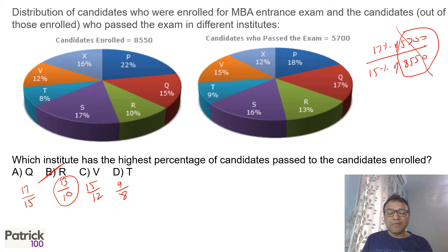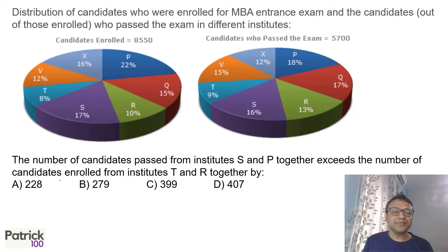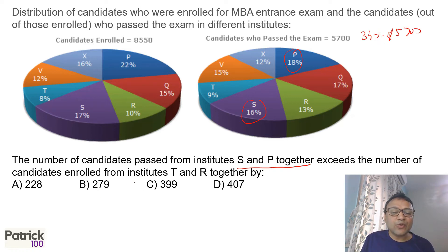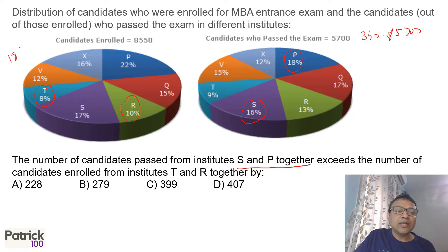Among the four, 13 upon 10 is the maximum value, so R will be the highest percentage passed. Now for the next question: the number of candidates passed from S and P together versus candidates enrolled from T and R together. S and P together is 34%, so 34% of 5,700. T and R enrolled is 18%, so 18% of 8,550.